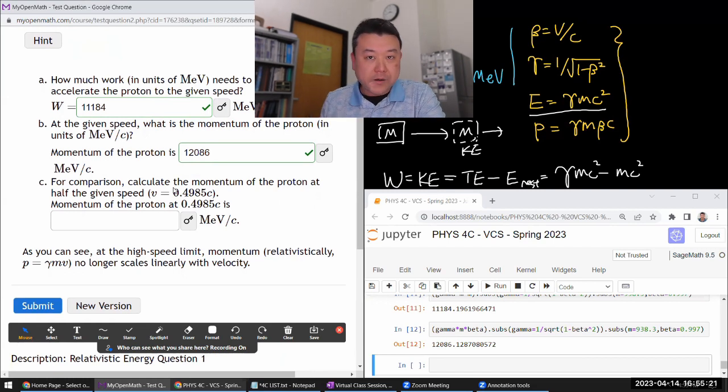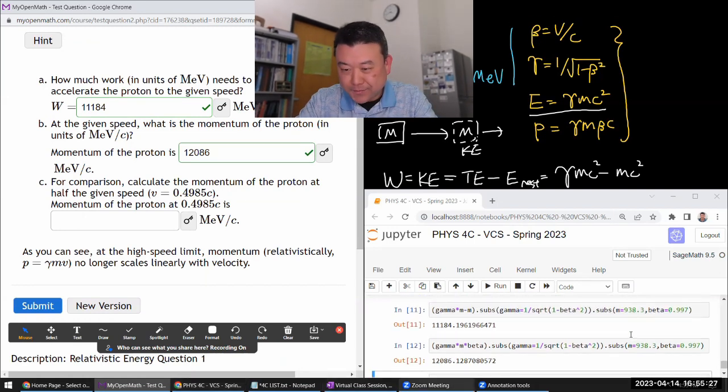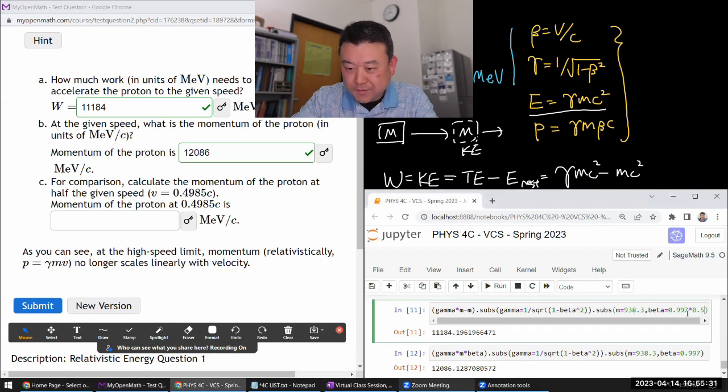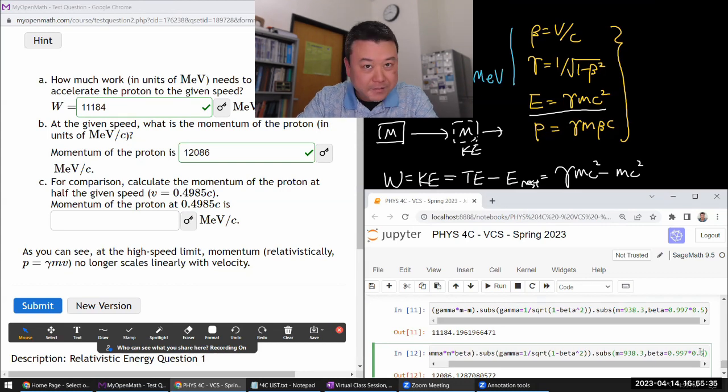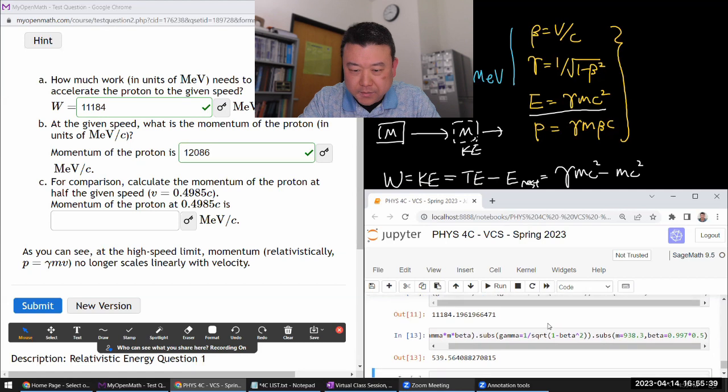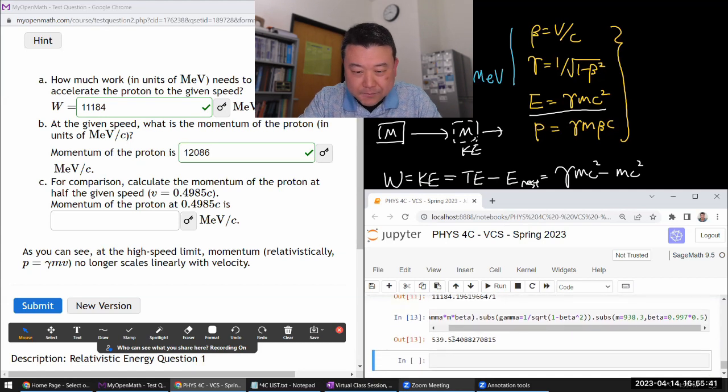Okay, last one. For comparison, calculate the momentum of the proton at half the given speed. That's why I love doing it this way, because then all I have to do is just change this number into half of what it was. Momentum. Oh, momentum. All right. I will just only do the second number.